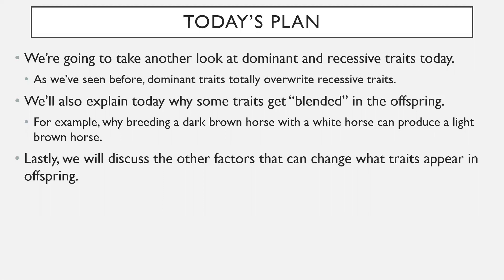For example, imagine if you bred a dark brown horse with a white horse — you'd actually find that you'd end up getting a light brown horse, despite the fact that dark brown is a dominant hair color. We'll talk about why that happens. We're also going to discuss some other factors that can change what traits appear in the offspring. That's really the focus today: what traits are showing up in offspring and how can we predict that?